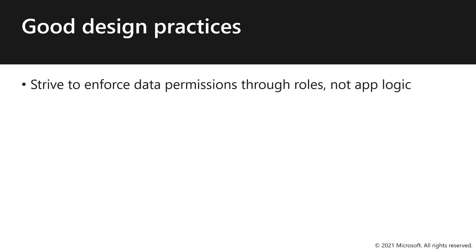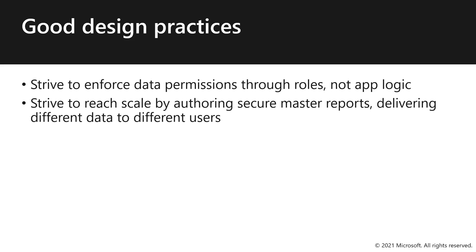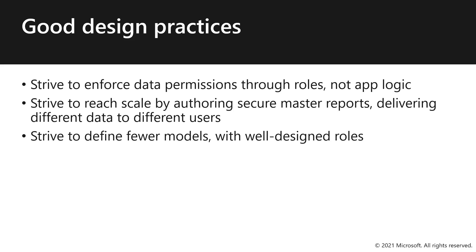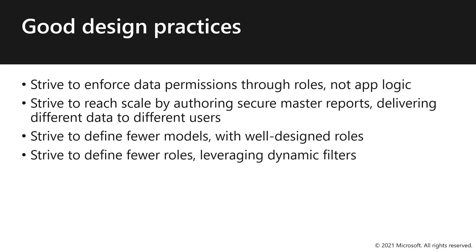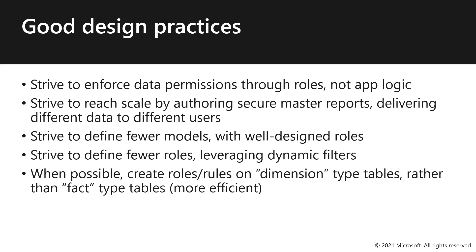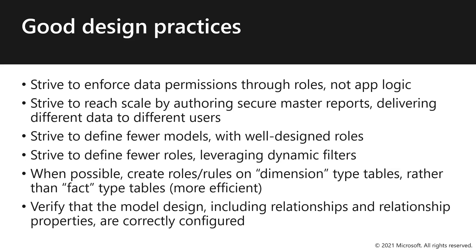There are many good design practices to consider when enforcing row-level security. First, strive to enforce data permissions through rows, not app logic. Strive to rescale by offering secure master reports that deliver different data to different users. Try to define fewer models with well-designed roles, and strive to define fewer roles leveraging dynamic filters. When possible, create roles and rules on dimension-type tables rather than fact-type tables, as it's much more efficient. Your dimension-type tables are things you apply filters and grouping to, like products, people, places, and concepts. Verify that the model design, including relationships and properties, are correctly configured, because those model relationships propagate filters, and if they aren't correct, you might have the wrong filters propagating and may not enforce the permissions you expect.